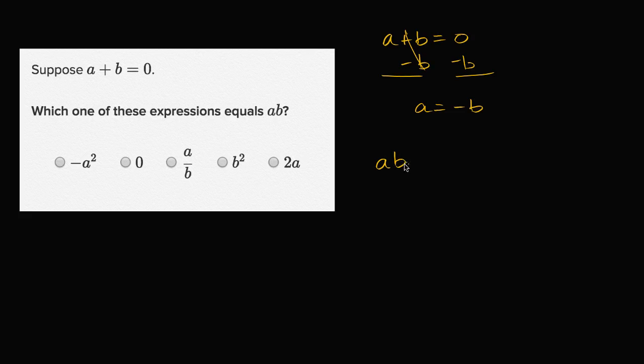So a times b, well I could write this a few ways. I could substitute the a with a negative b, since we know a is equal to negative b, in which case a times b would be negative b times b, which is equal to negative b squared.